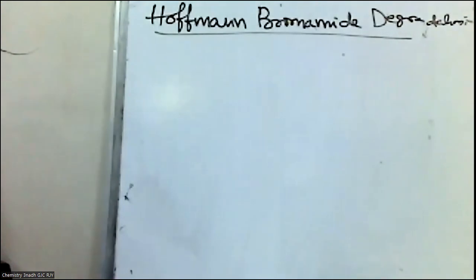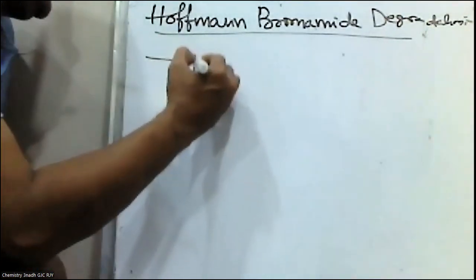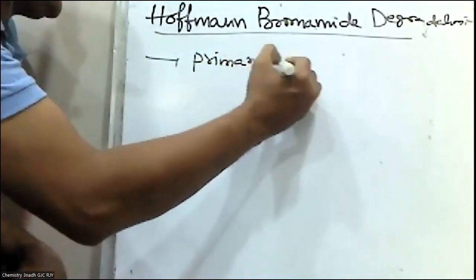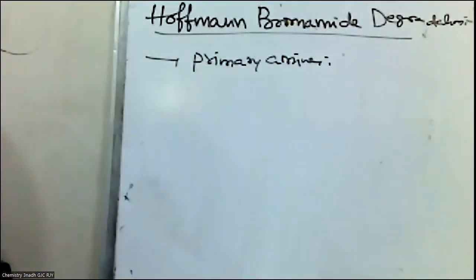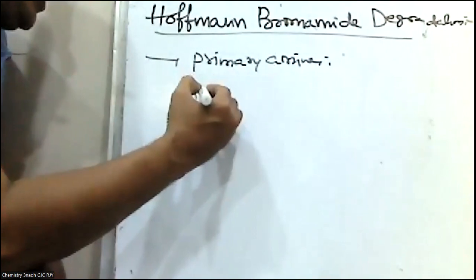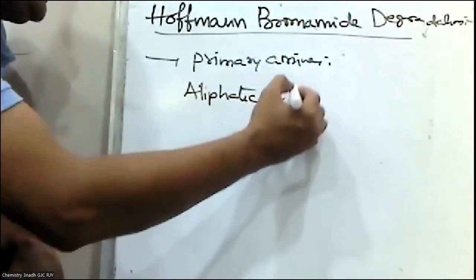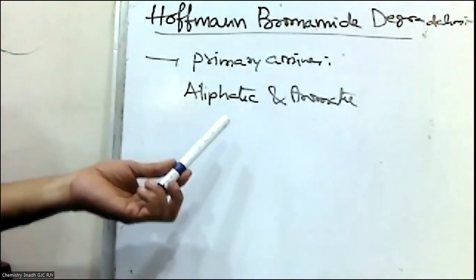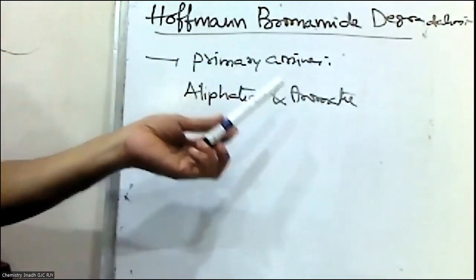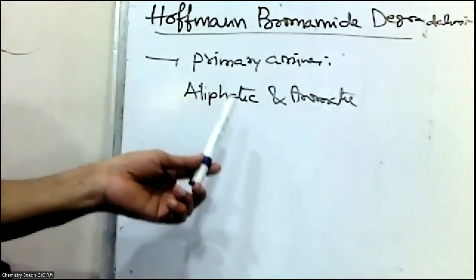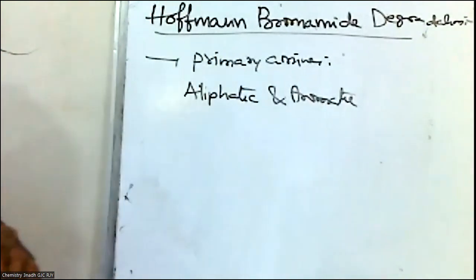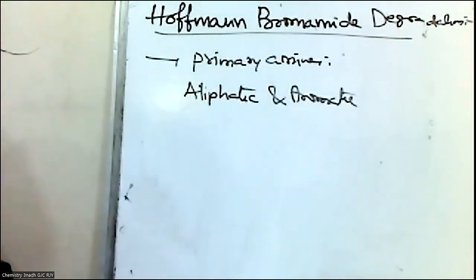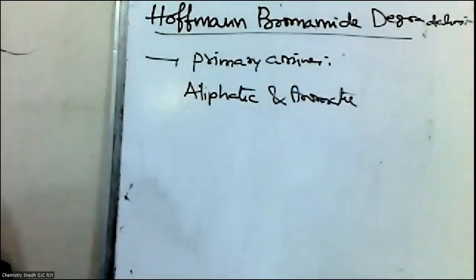What is Hofmann Bromamide degradation? This method is used for the preparation of primary amines, and by using this method we can prepare both aliphatic and aromatic amines. In my previous video, I discussed Gabriel phthalimide synthesis, which is not suitable for the preparation of aromatic amines. But Hofmann Bromamide degradation is suitable for the preparation of both aromatic and aliphatic amines.